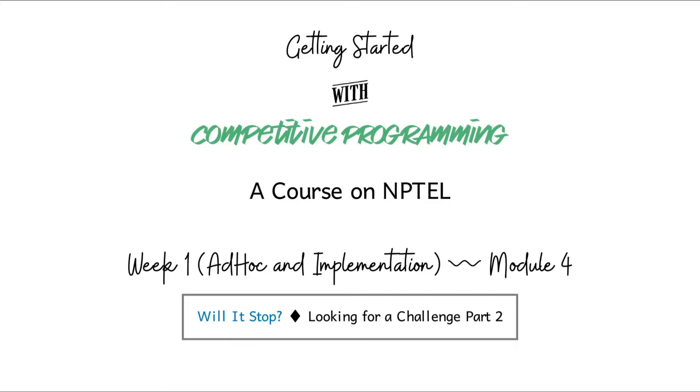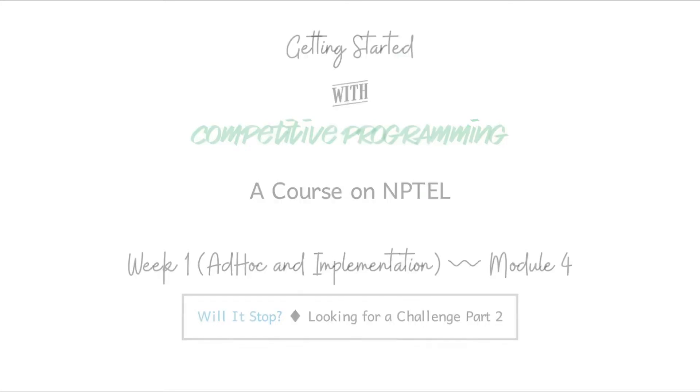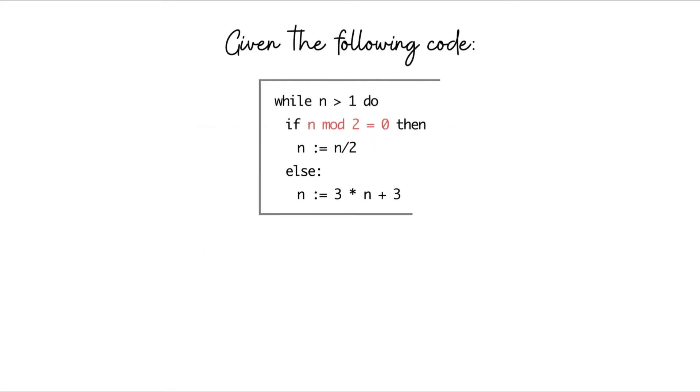Let's begin by looking at the problem statement without the story for now. We're given the following program: it's a snippet of code involving a while loop and a number n. It seems to be doing something different based on whether n is even or odd. Specifically, if n is even it gets halved, and if n is odd it transforms as 3 times n plus 3. At a high level, the number is either becoming smaller or bigger.